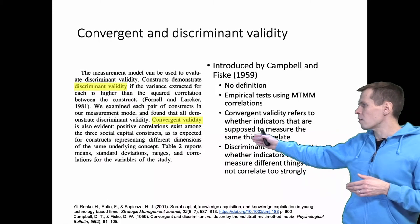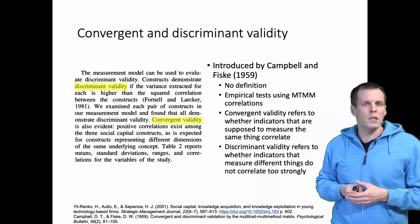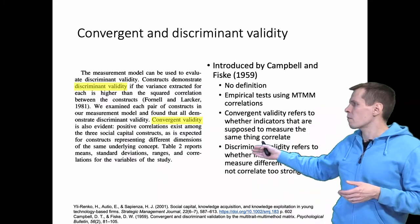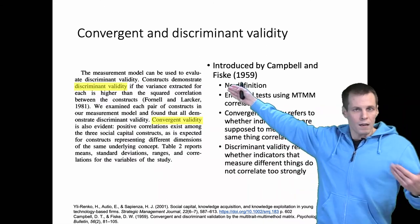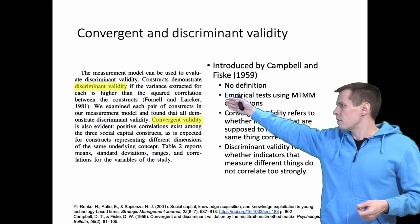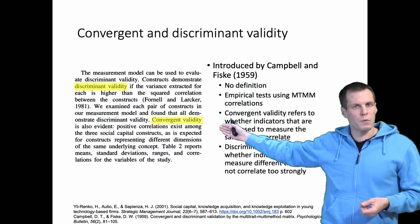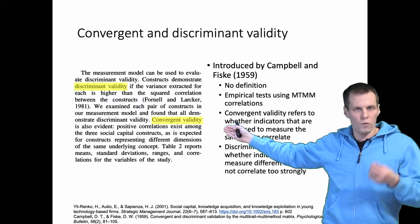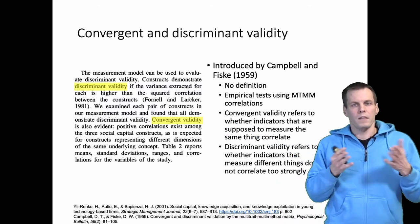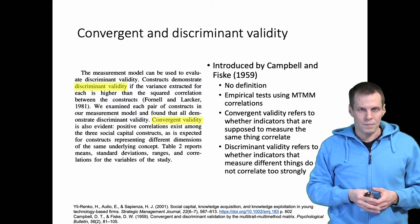This example comes from Ylirenko and co-authors. They present a paragraph stating that some statistics provide evidence for discriminant validity, other statistics provide evidence for convergent validity, and that there is no problem with these two validities.